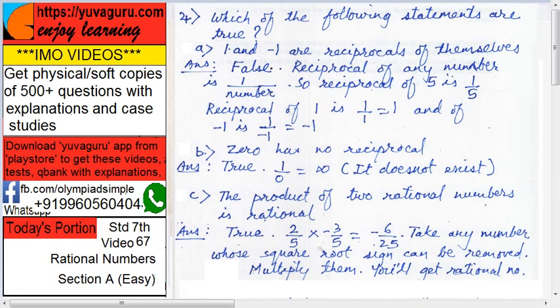will get a rational number. See the definition of rational number: p/q where q is not equal to 0.